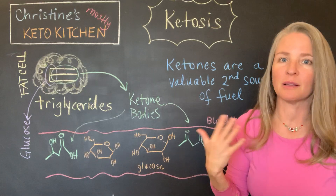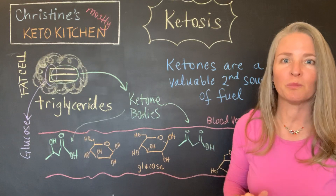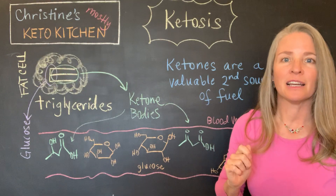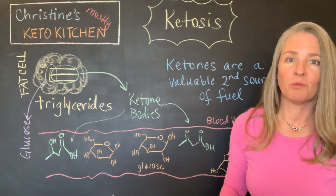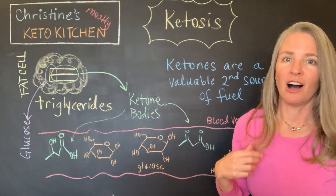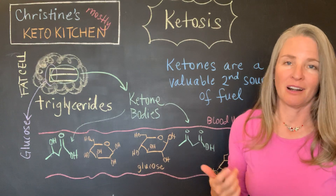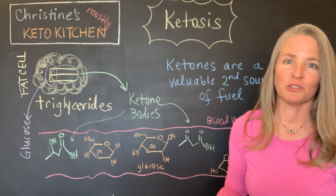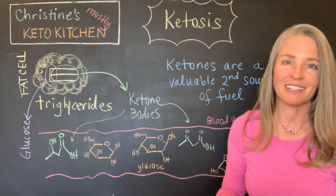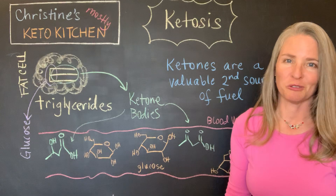It's nice because that means you're getting both of those. Some cells, particularly in your brain, need glucose, and that's why it's so important. Our bodies are always able to make glucose — our livers can do gluconeogenesis and make glucose.